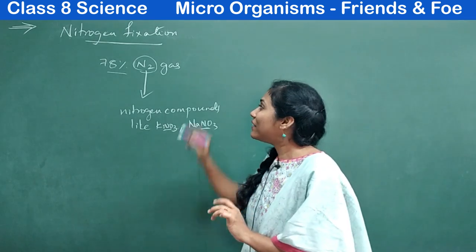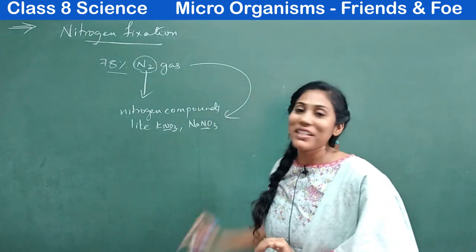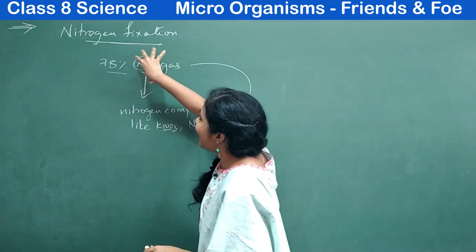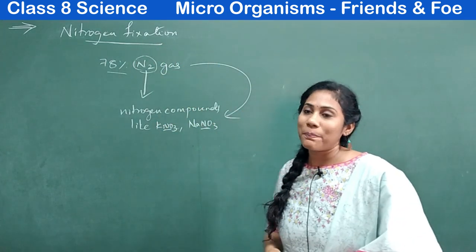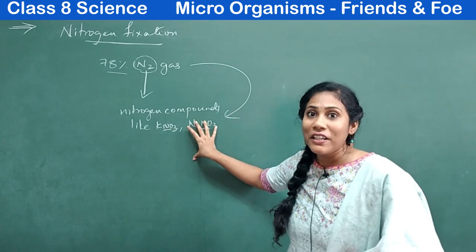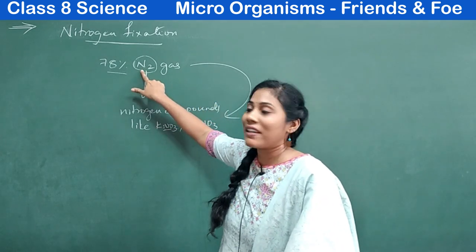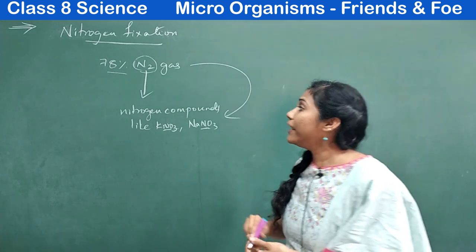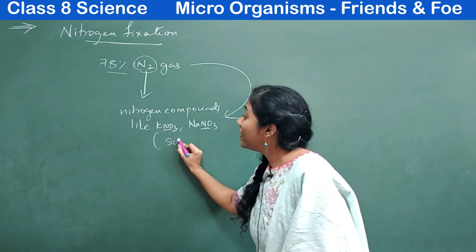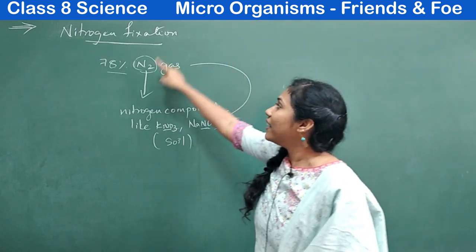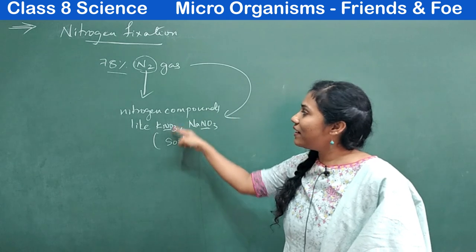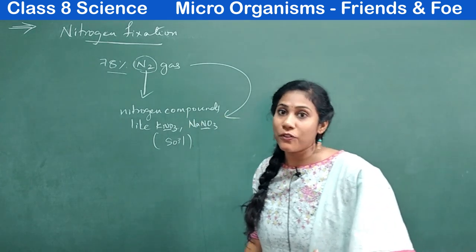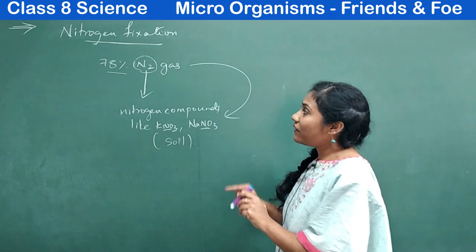We will use nitrogen in the form of nitrogen compounds — like KNO₂, KNO₃, NaNO₃. Our body or plant body can use nitrogen only in these forms, not as N₂. Our atmosphere is very rich with N₂ gas, but the atmosphere doesn't have these types of compounds. Plants need nitrogen in this form, not as N₂. Plants take up nitrogen as KNO₃ and NaNO₃ from the soil, so these things must be present in soil. We want something that can convert N₂ into usable nitrogenous compounds in soil.